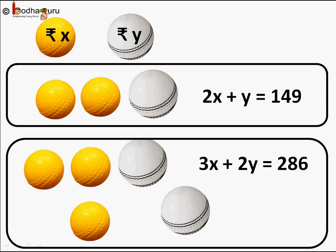And for the second option, price of three yellow rubber balls, that is 3X rupees, plus two white leather balls, that is 2Y rupees, should add up to 286 rupees. So we got a pair of linear equations with two variables.